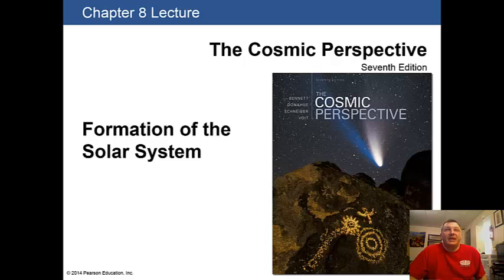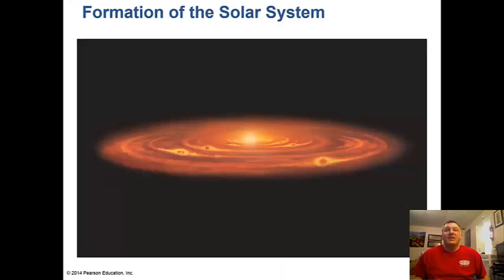Hi guys, welcome to Chapter 8 lecture outline on the formation of the solar system. Here is a diagram of what we think the solar nebula looked like 4.5 billion years ago - a rotating gas disk with dust, gas, and other elements inside of it.